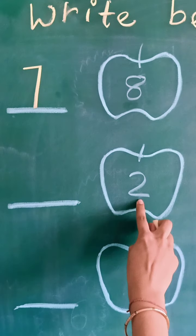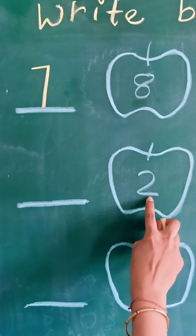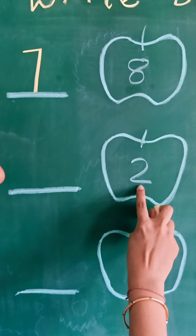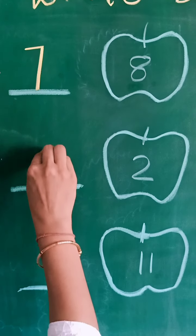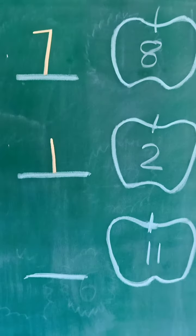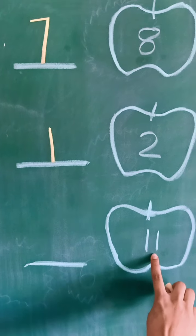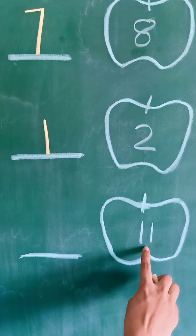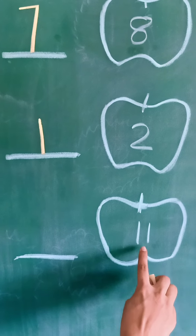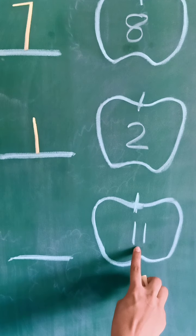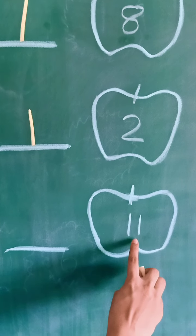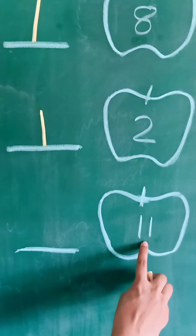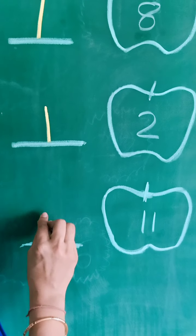Number 2. Which number comes before 2? 1 and 2 — which number comes before 2? Number 1. Number 11. We speak 1 to 11 numbers: 1, 2, 3, 4, 5, 6, 7, 8, 9, 10 and 11. Which number we speak before 11? Number 10.